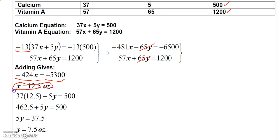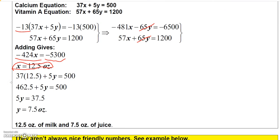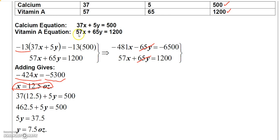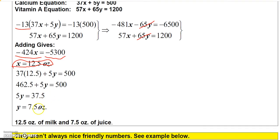Dividing negative 5300 by negative 424 gives 12.5, so we need 12 and a half ounces of milk. Plugging X equals 12.5 into the first equation: 37 times 12.5 plus 5Y equals 500, giving 462.5 plus 5Y equals 500. Subtracting 462.5 from both sides gives 5Y equals 37.5, so Y equals 7.5. The answer is 12.5 ounces of milk and 7.5 ounces of juice.